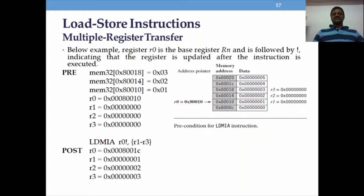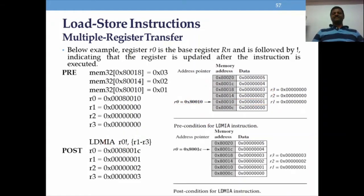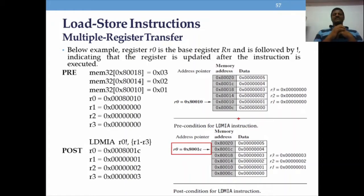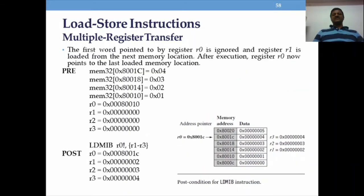After execution, if you used the writeback symbol (exclamation mark), r0 updates to the new address 0x80018. If you remove the writeback symbol, r0 remains at its earlier initial value 0x80010. It will point to the last updated value from memory.